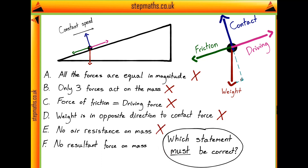Finally, statement F states that there is no resultant force on the mass. Looking at our particle, we know it's moving at constant speed parallel to the slope and not accelerating at all perpendicular to the slope. So there's no acceleration on it at all, and it's not changing direction — it's moving in a straight line. Therefore it's true: there must be no resultant force on the mass, and the correct answer is F.